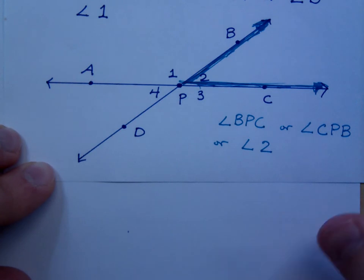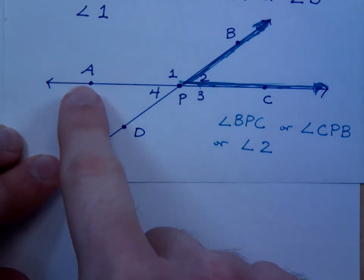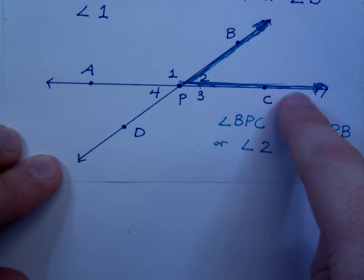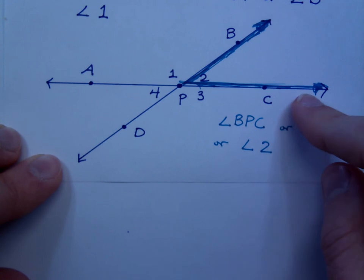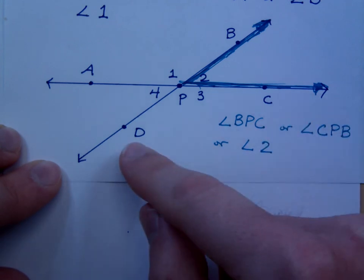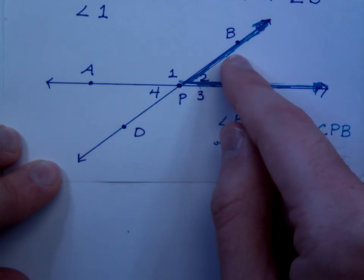Straight angles. Do you have any straight angles here? Yes. Name them. Name a straight angle in this diagram. APC. APC would be this. Basically, it's a line, right? What is another angle that's a straight angle? DPB. DPB. Right?